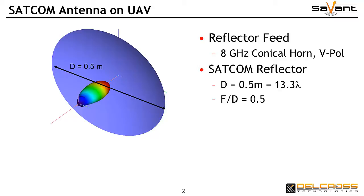The reflector design may be imported into Savant using either a faceted or a NURBS model if a CAD model already exists. If not, you can also take advantage of the parabolic canonical shape construct in Savant version 4 to create the reflector. Savant has a built-in conical feedhorn model, and we place this model at the parabola's focal point.